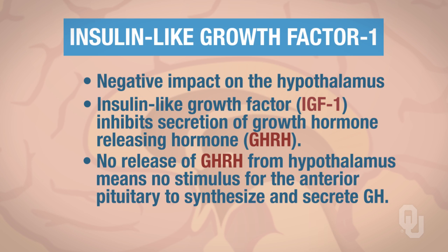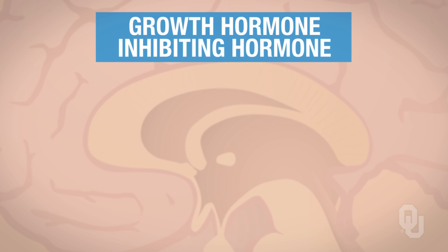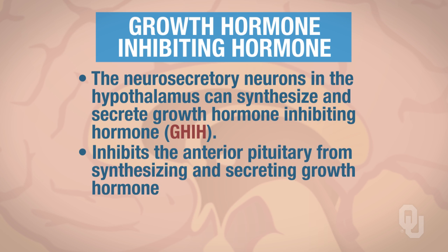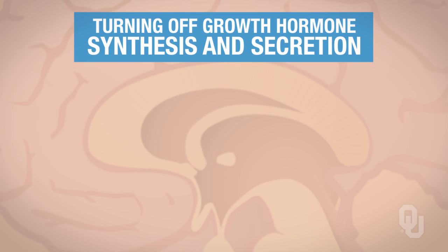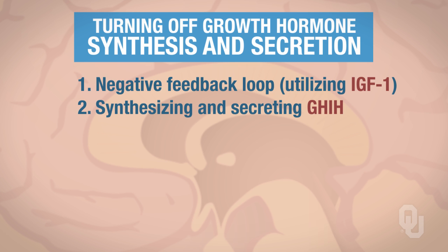There is also another hormone synthesized and secreted by the hypothalamus that helps turn off growth hormone secretion: growth hormone inhibiting hormone, or GHIH. The neurosecretory neurons in the hypothalamus can synthesize and secrete GHIH, which inhibits the anterior pituitary from synthesizing and secreting growth hormone. So we have two ways to turn off growth hormone: one involves the negative feedback loop utilizing IGF-1, and the other is by synthesizing and secreting growth hormone inhibiting hormone.